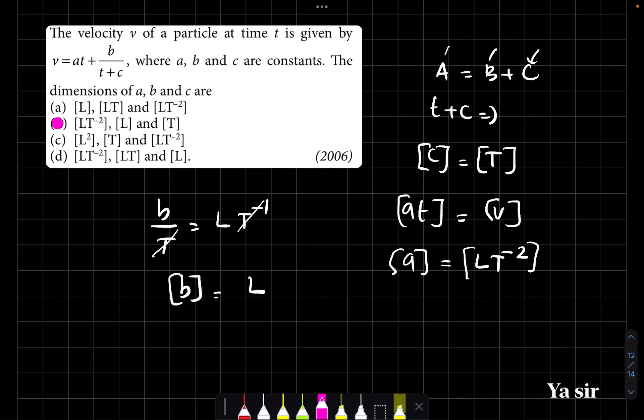So what is the correct option? b: LT to the power minus 2, L, and T. All right. Thank you.